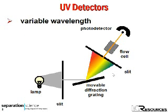Slide 5 shows a schematic of the variable wavelength UV detector. This is one of the two most popular LC detectors in use today. It's quite simple in concept and very reliable. The presence of a sample component in the column effluent is measured by the change in UV absorbance in the mobile phase as it passes through a flow cell.